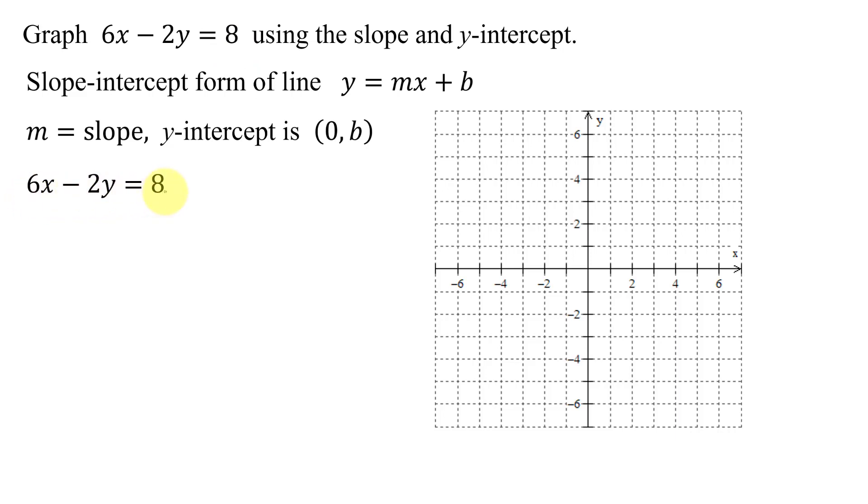So here's my given equation. To get y by itself, the first thing I'm going to have to do is subtract 6x from both sides. 6x minus 6x is 0, so I get negative 2y equals, unlike terms on the right-hand side, can't combine, negative 6x plus 8.